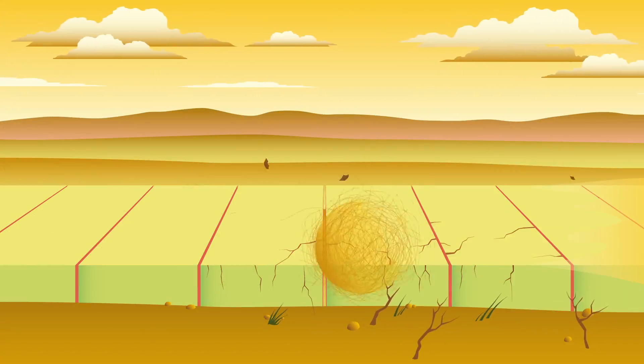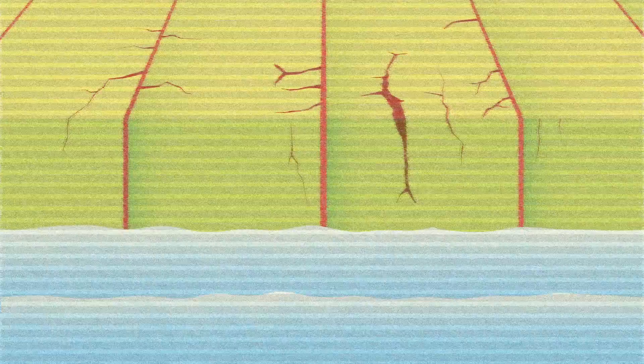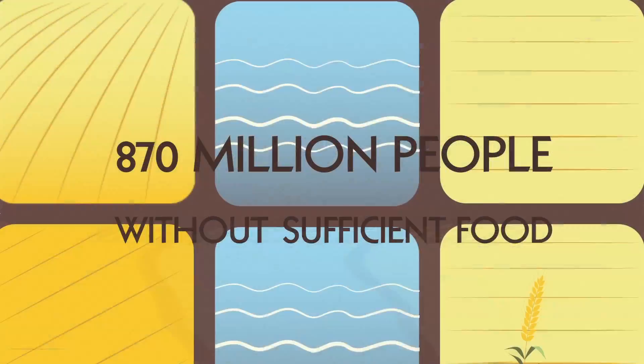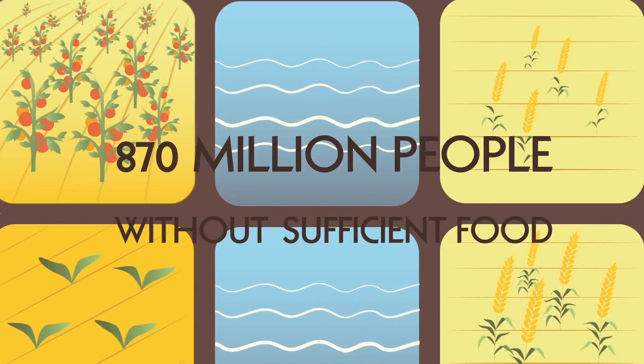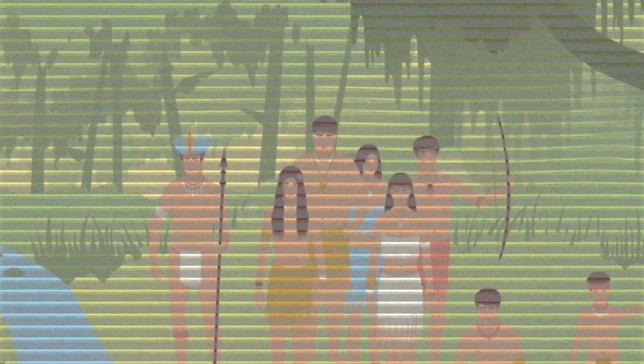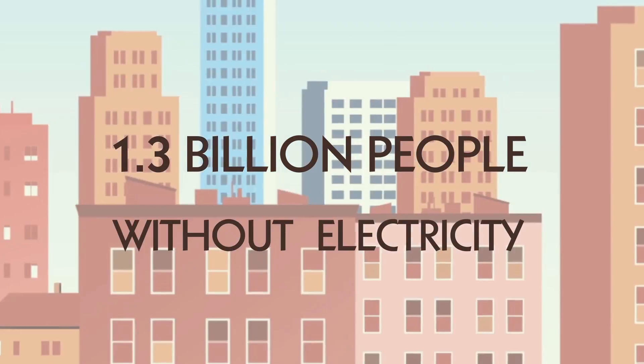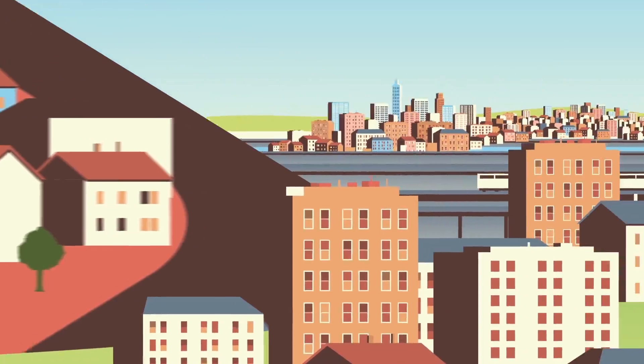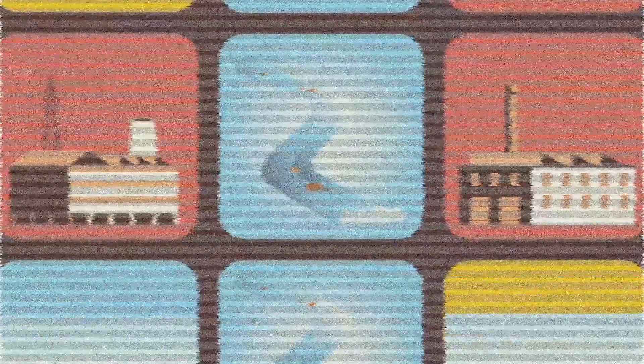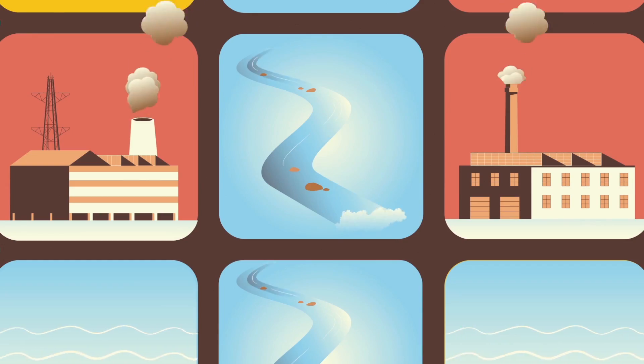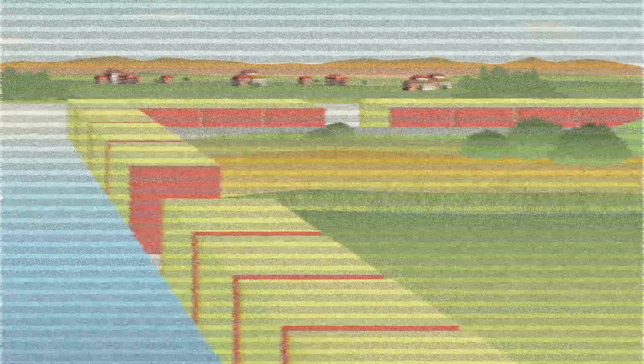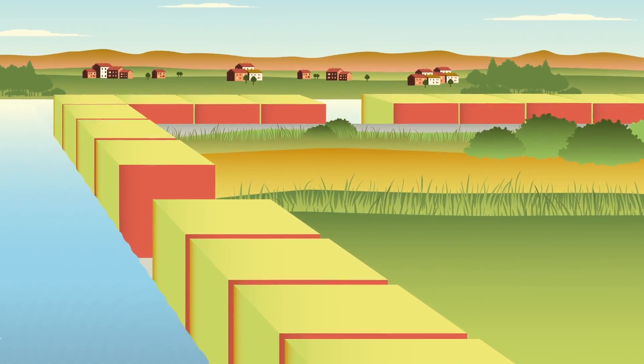Business as usual has led to this: 870 million do not have sufficient food, 1.3 billion live without electricity. An ever-growing population will require more goods, more food, more energy and more water, with devastating effects on the planet.